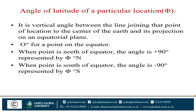Angle of latitude: For a particular location, it is the vertical angle between the line joining that point of location to the center of the Earth, and its projection on the equatorial plane. Zero degrees is for a point on the equator. When the point is north of the equator, the angle is positive, up to plus 90 degrees representing the north side. When the point is south of the equator, the angle is minus 90 degrees.